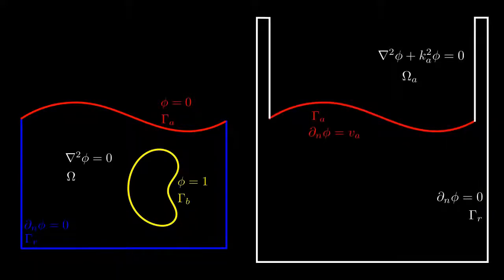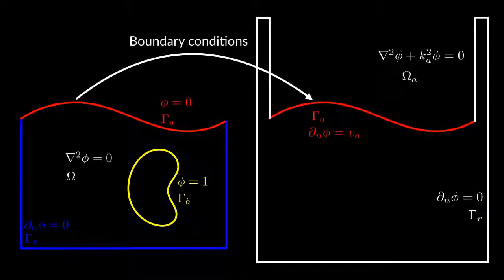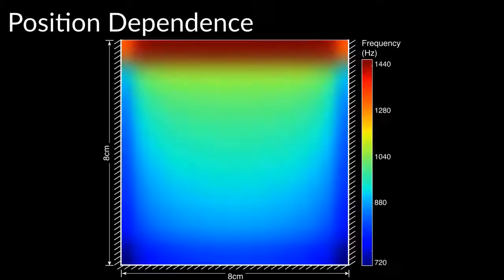To compute how loud each bubble is, we solve the exterior Helmholtz problem. The solution of the interior frequency problem provides the boundary conditions for the exterior problem. This provides effects which were not possible to compute previously.